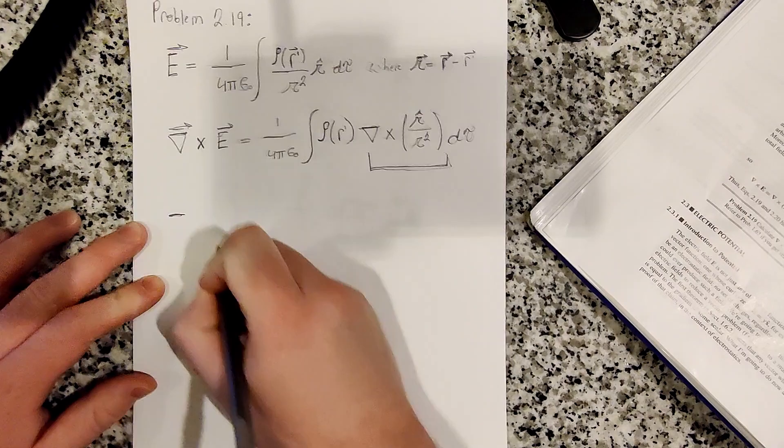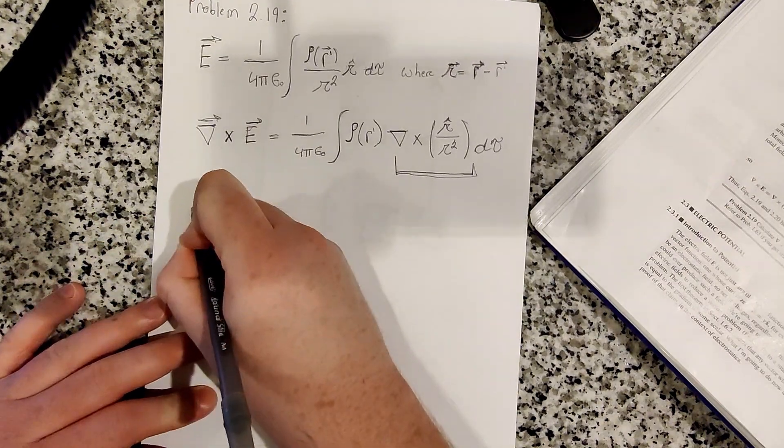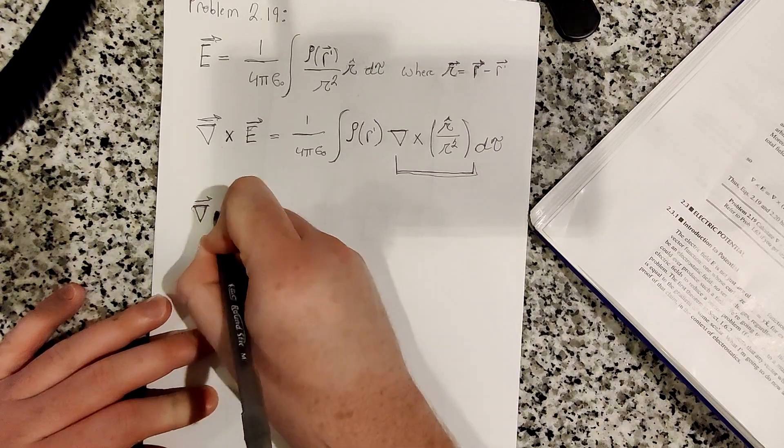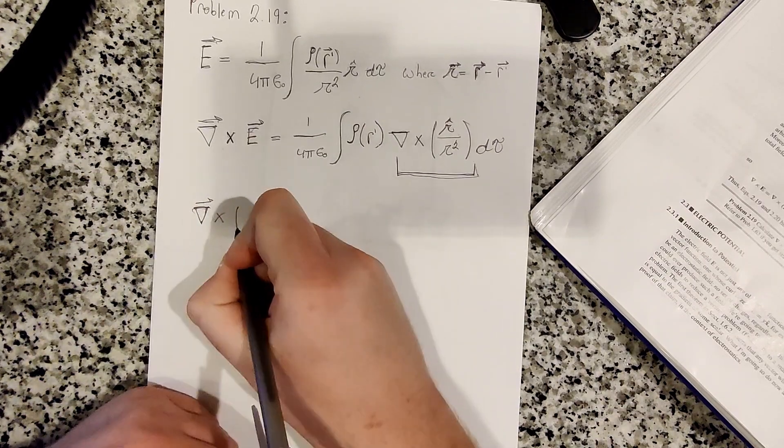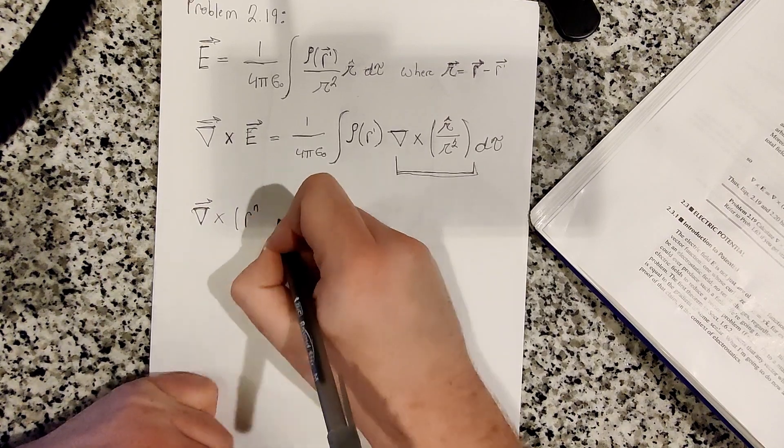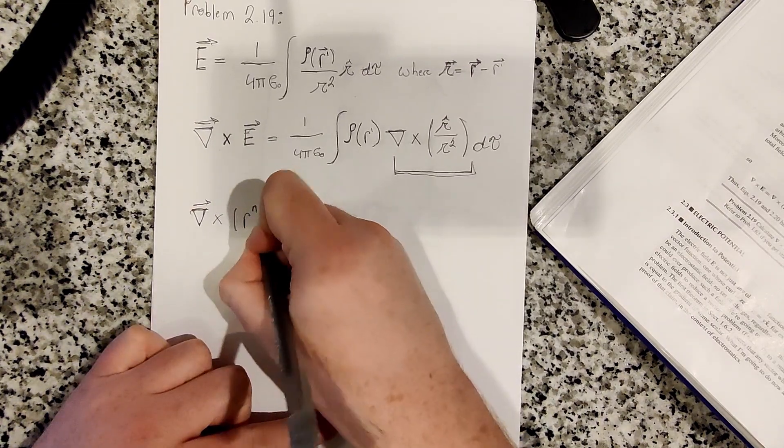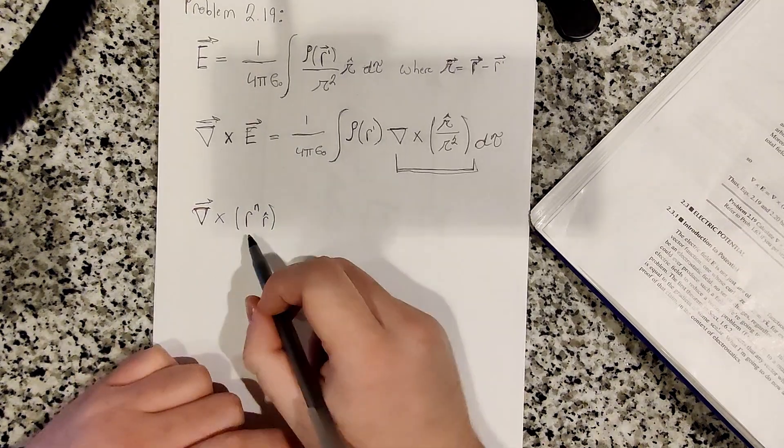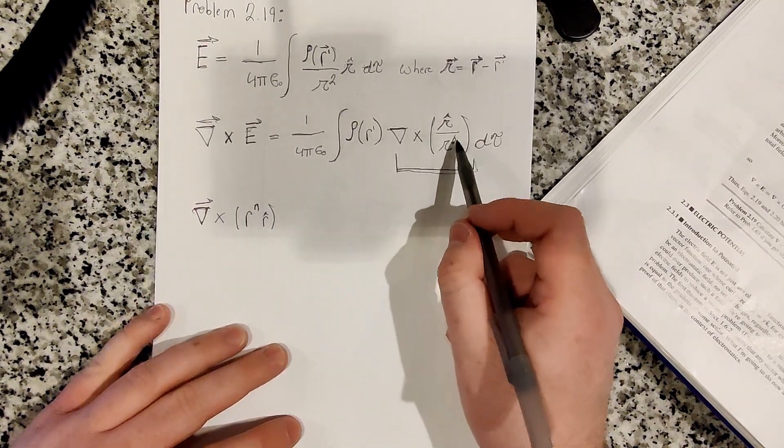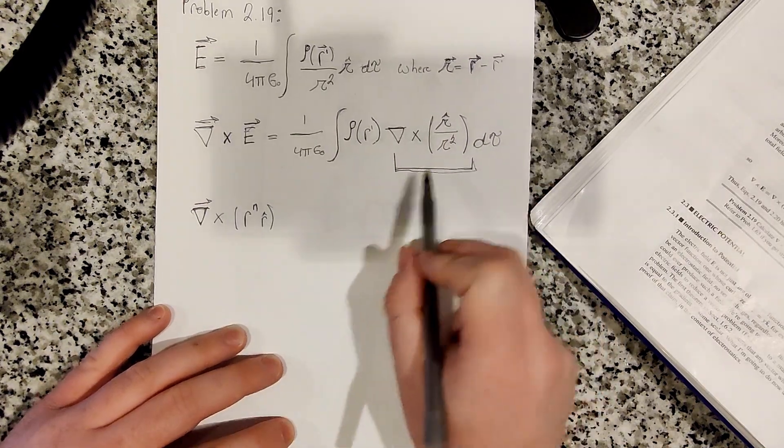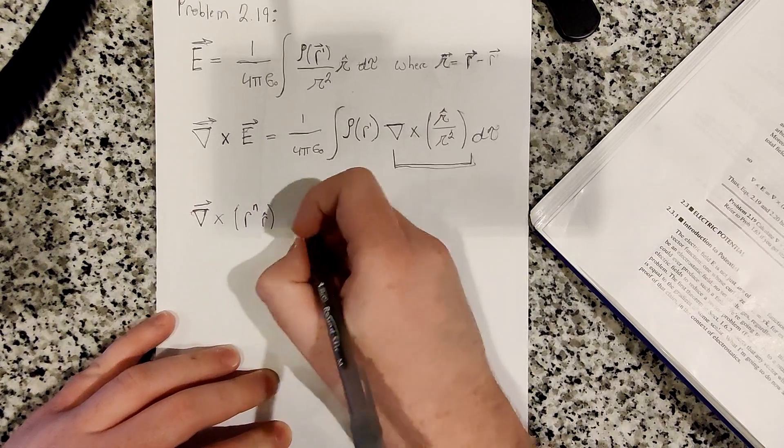So there's a general equation you can derive. So the curl of a function r to the n, where r is just a scalar, r to the n times r hat. In this case, r to the n would be r to the minus 2. So n would be minus 2 in our case. But we're going to derive the general case equation.